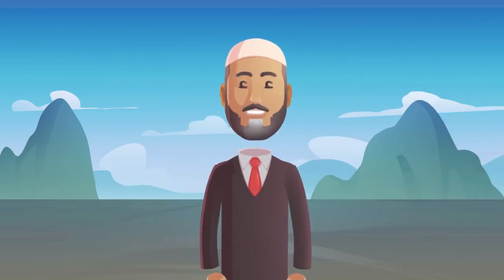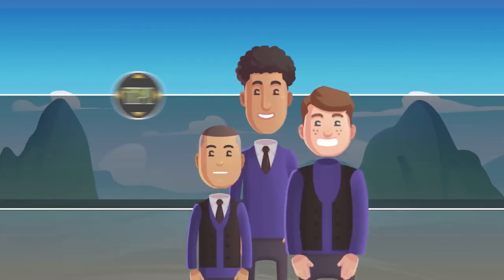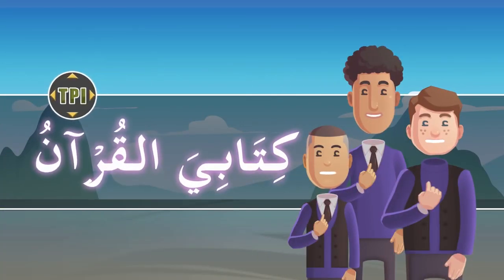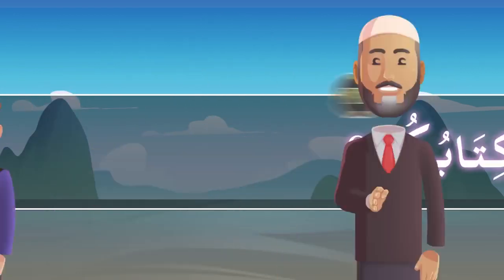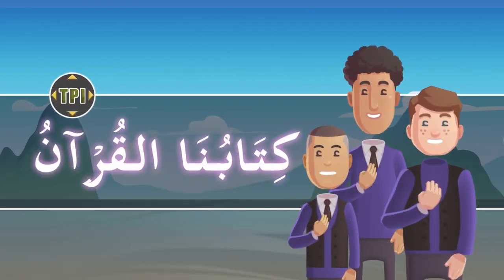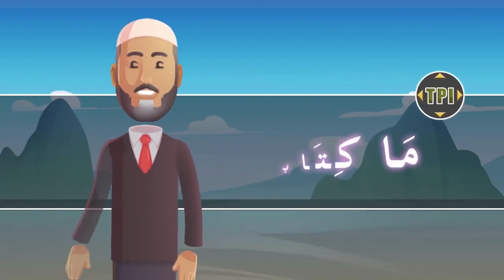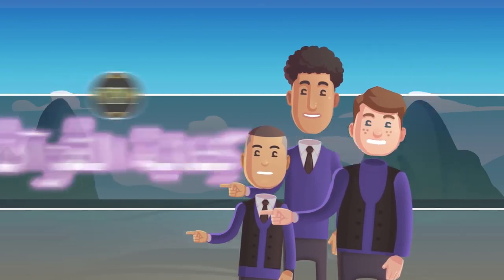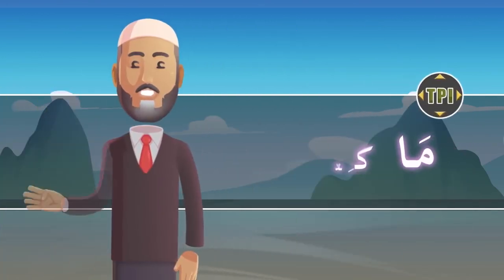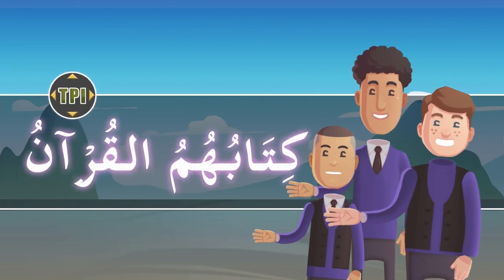Mashallah. Now, can you answer me in Arabic? Ma kitabuka? — Kitabee al-Quran. Ma kitabukum? — Kitabuna al-Quran. Mashallah. Ma kitabuhu? — Kitabuhu al-Quran. Ma kitabuhum? — Kitabuhum al-Quran.